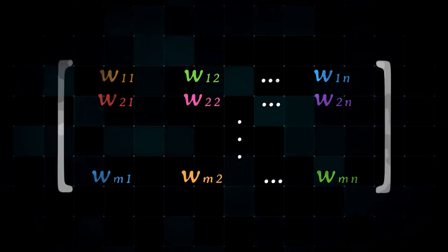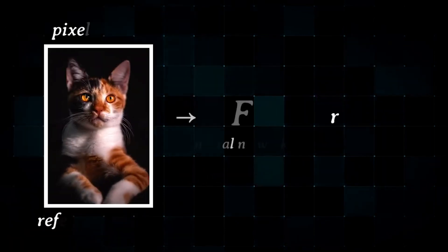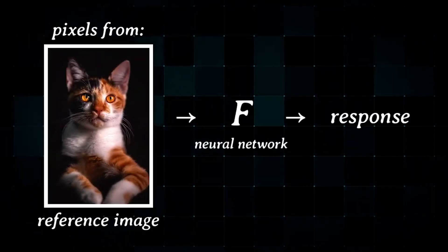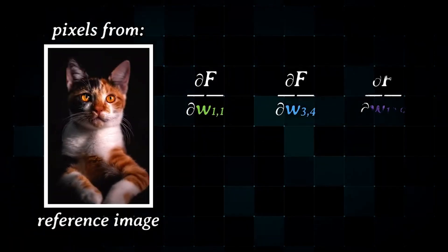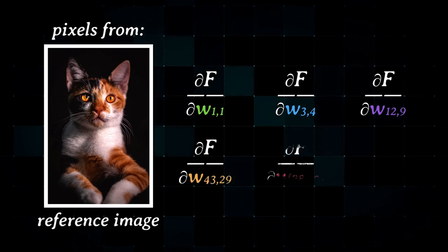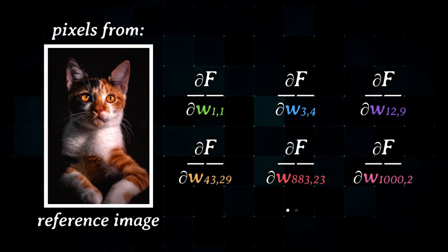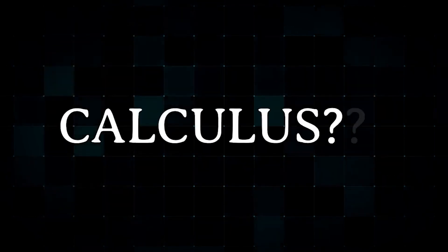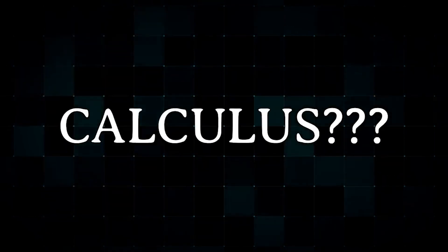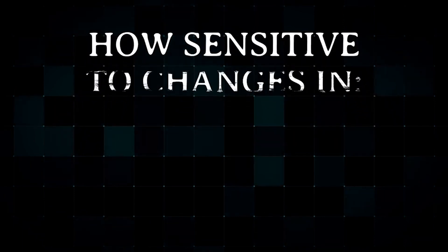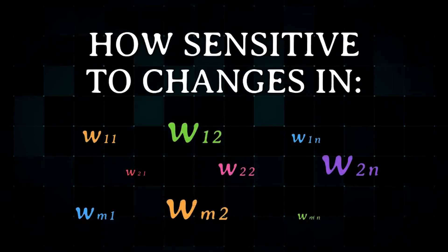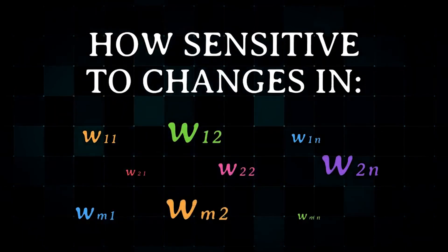To do that, for our reference image, the computer takes the derivatives of the final output with respect to each of these number entries in each function — which is the calculus way of saying it analyzes how sensitive the final response is to a change in each of these numbers.